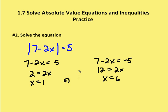I should go back and check my work to make sure that it's correct. If x is equal to 1, I have 7 minus 2 is equal to 5 — that's correct. And 7 minus 12 is equal to negative 5, but the absolute value of negative 5 is 5. So those two solutions are correct.